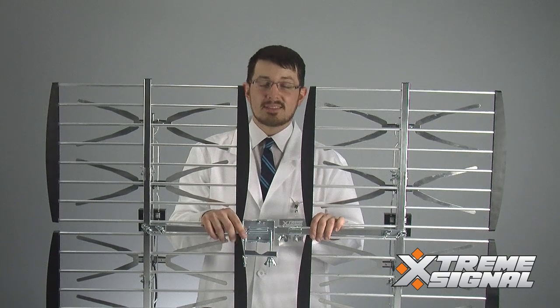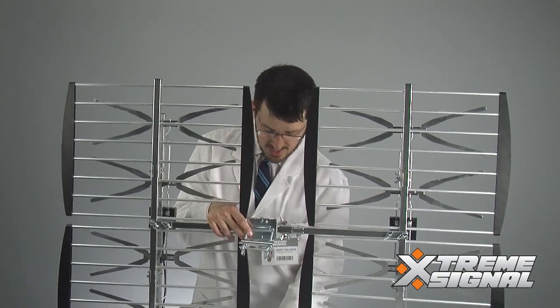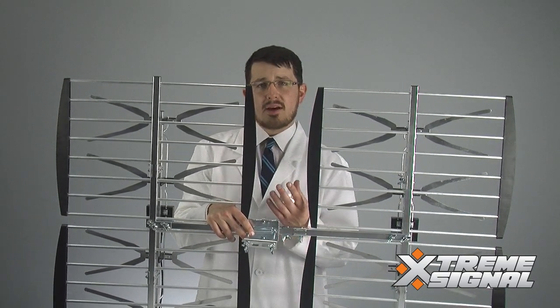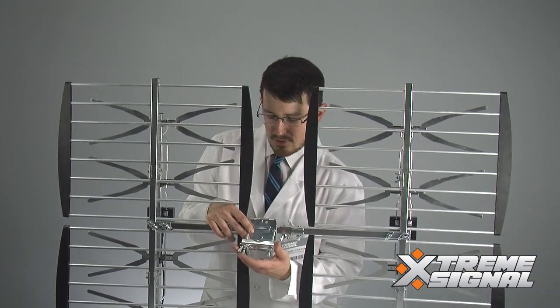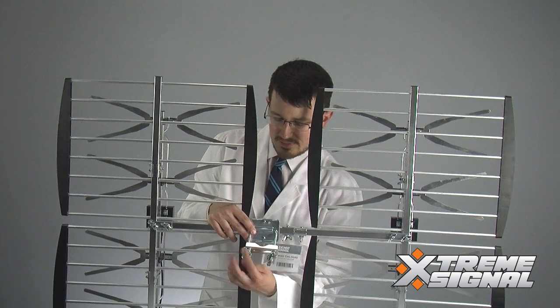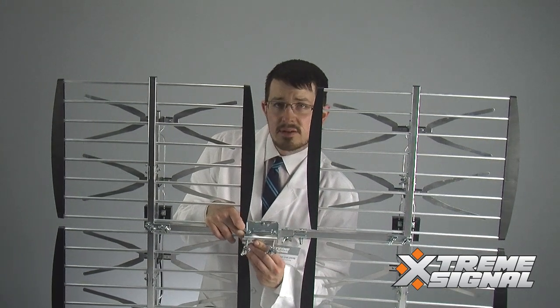Okay, last step. These two brackets here are used to clamp down on the mast that you're going to be mounting this antenna on. So it's basically a U-bolt with two wing nuts, so you can adjust them like this to tighten down the grip on the mast.